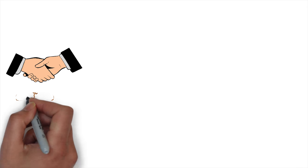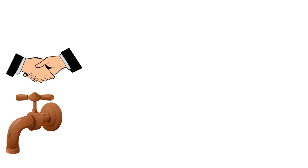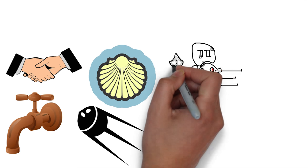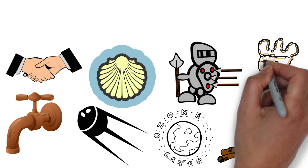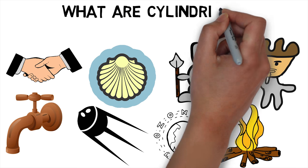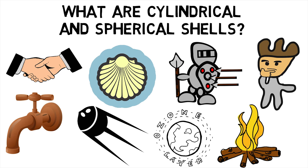Welcome back MechanicalEI. Did you know that cylindrical shells were what made the piping industry possible and the Sputnik one had a spherical shell to shield it from the atmospheric heat? This makes us wonder what are cylindrical and spherical shells?